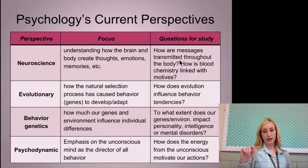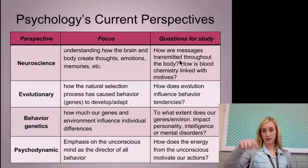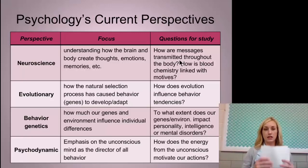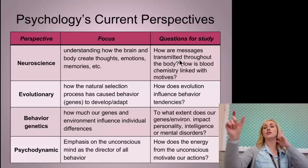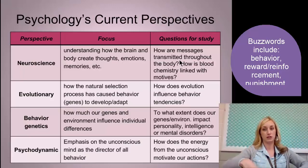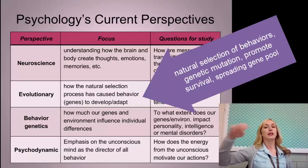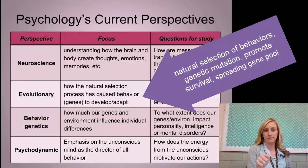Psychology's perspectives — this is the meat of our notes. The current perspectives is really what I want to sink in and have you take moving forward. I would suggest making a chart on a loose leaf sheet of paper to jot down the focus of each perspective, but also adding another column of buzzwords. Buzzwords are huge — this is what you would see in a test question that would indicate which perspective it is. For example, if it says natural selection, mutation, or genes for survival, that's definitely evolutionary.